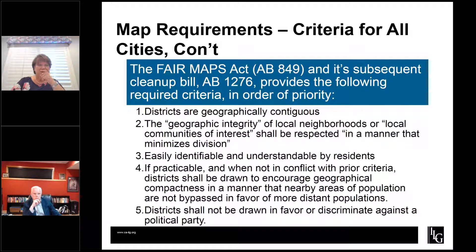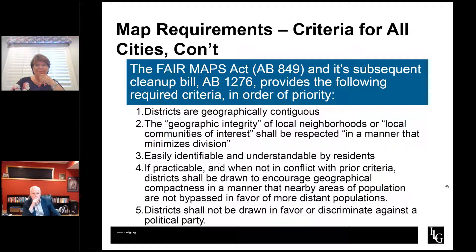The fourth and fifth criteria: fourth is geographical compactness, which is somewhat similar to contiguity — you often have compactness when you have contiguity. And fifth, you cannot draw your districts in a way that favors or discriminates against a political party. We have to be blind to politics as we draw our district boundaries.